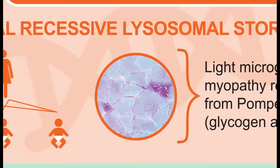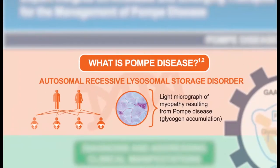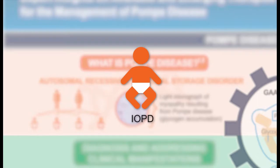There are two types of Pompe disease. The earliest presentation is infantile-onset Pompe disease, or IOPD. These patients are symptomatic in the first year of life, and death occurs soon afterwards if the disorder remains untreated. One distinguishing characteristic between infantile-onset and late-onset Pompe disease is that cardiomyopathy is a prominent finding in the infantile form.